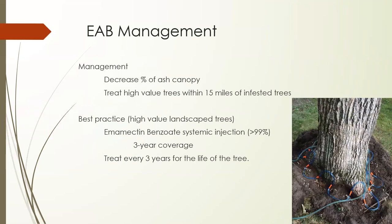How do we manage EAB? The most important thing is to decrease the amount of ash in the canopy — especially in communities that are vulnerable — so it doesn't get onto our windbreak trees and we can keep them healthy longer. When EAB gets to within 15 miles of you, you can treat trees with insecticide, though that's not something you can do in a windbreak. That's one of the reasons diversity is so critically important.